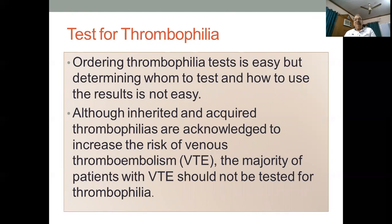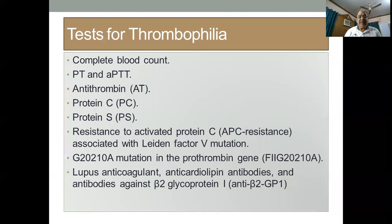When testing for thrombophilia, it is easy to order the tests but difficult to interpret, and the majority of the time it is said that you do not require to carry out the test for thrombophilia in the majority of DVT settings. The tests to be done include: complete blood count, prothrombin time, activated partial thromboplastin time, antithrombin assay, protein C assay, protein S assay, APC resistance, factor V Leiden, prothrombin mutation, lupus anticoagulant, anti-cardiolipin antibodies, and beta-2 glycoprotein.